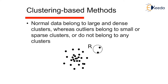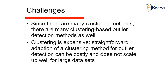The fifth type is clustering-based method. Normal data belongs to large and dense clusters, whereas outliers belong to small or sparse clusters, or do not belong to any cluster. After forming clusters, whatever data points remain outside are considered outliers. The challenges: since there are many clustering methods, there are many clustering-based outlier detection models. Clustering is expensive, and a straightforward adoption of clustering for outlier detection can be costly and does not scale well for large datasets. In this video we have seen a total of 5 outlier detection methods and the challenges each one faces.